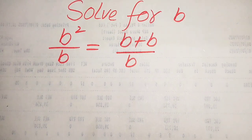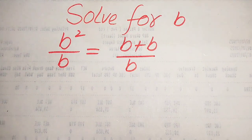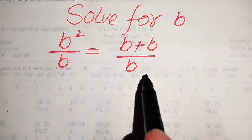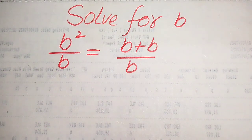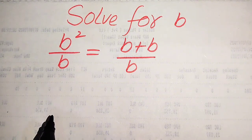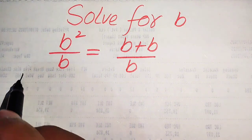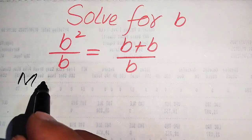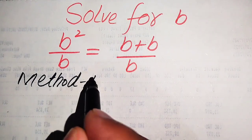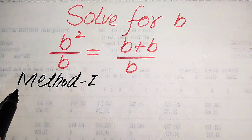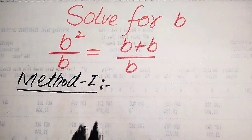Hello everyone. How to solve this problem for the values of b, if we have b squared divided by b equals b plus b divided by b? We will solve this problem using two methods. I hope you like both of these methods, but if you have any other method in mind, please don't hesitate to write it in the comment section.